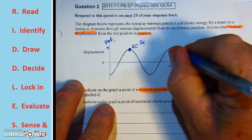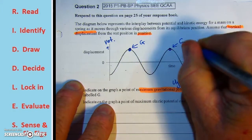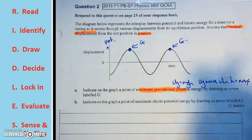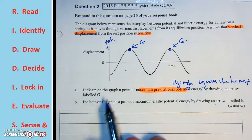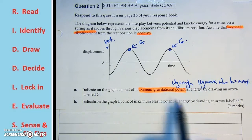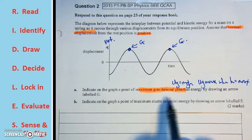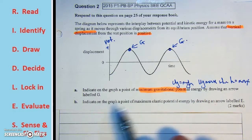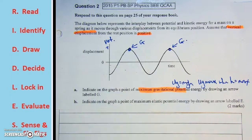Similarly, we could label this point here Point G. Now let's read through and check. Indicate on the graph a point of maximum gravitational potential energy by drawing an arrow labeled G. So G, there's the point. Beautiful. So that's part A done.